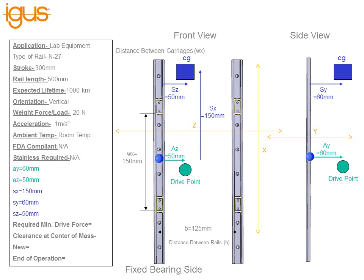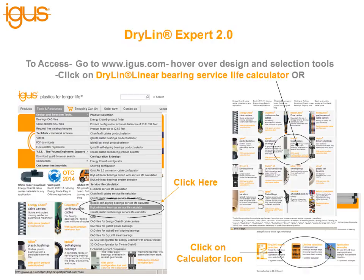An easy way to remember the difference between A and S: think A for action force or actuator, and S for mass. Now that we have all these dimensions we're ready to plug our data into the expert system.